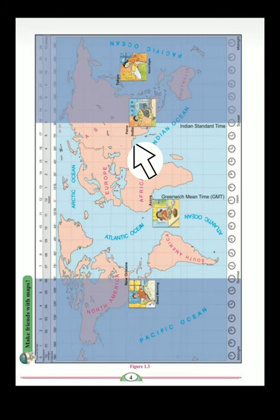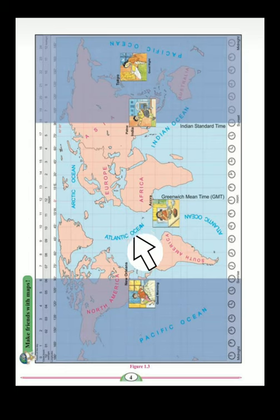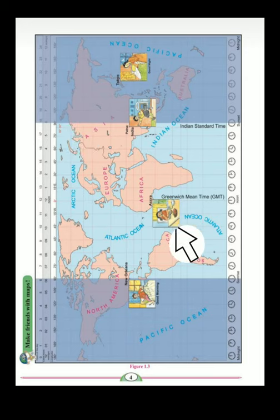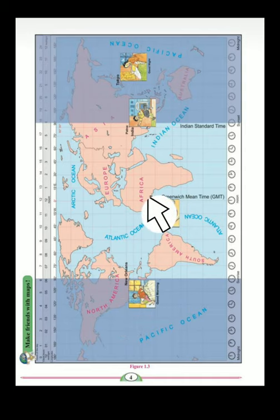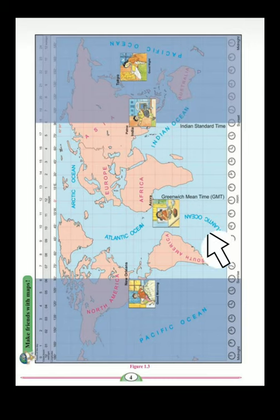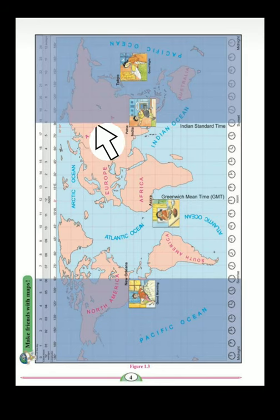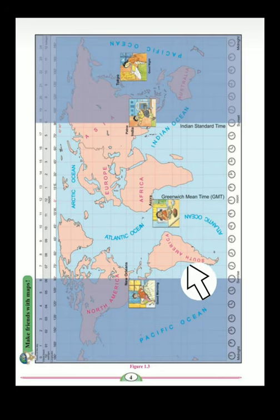First, let me make you familiar with this entire diagram. Basically, this is a world map — you can see all the continents: North America, South America, Europe, Africa, Asia (which includes India), Australia, and Antarctica at the bottom. This map has been given to show you the differences of times across various time zones.